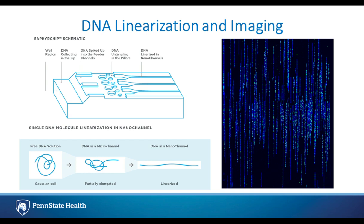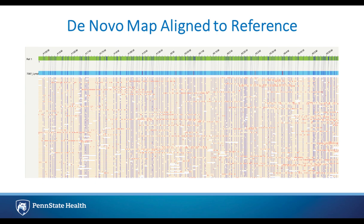Here's a schematic of the sapphire chip. The DNA is loaded in, becomes untangled in the pillars, and then becomes linearized in the nanochannels. You can see in the bottom left how DNA is coiled up when in solution, and passing through this chip it becomes linearized. On the right side, you can see what it actually looks like when samples are being run in the Sapphire instrument — the DNA is labeled in blue with very long strands, since this is high molecular weight DNA, and the green dots are where the DNA has been stained using the DLE to create the molecular barcode.